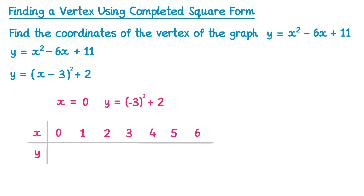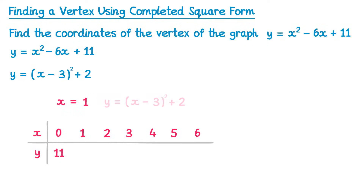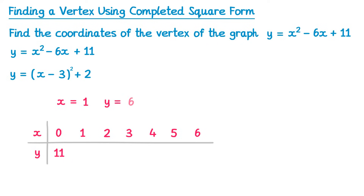which is negative 3, squared, which is positive 9, and then add 2, which is 11. So if x equals 0, y is 11. For x equals 1: 1 take away 3 is negative 2, squared is 4, add 2 is 6. So if x is 1, y is 6.